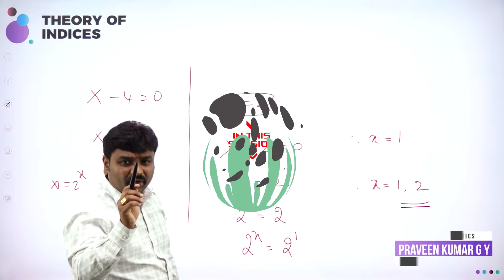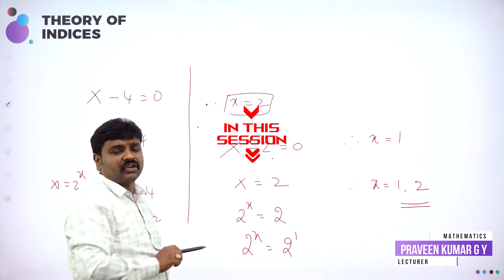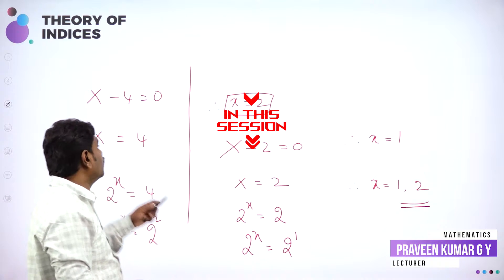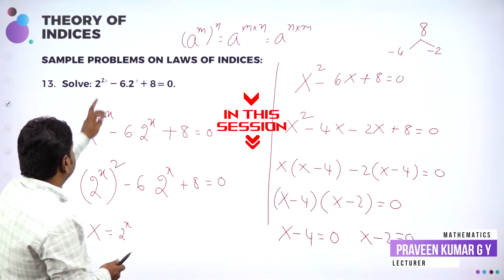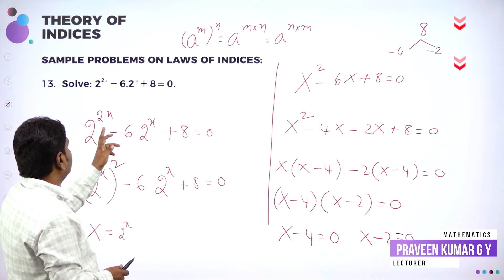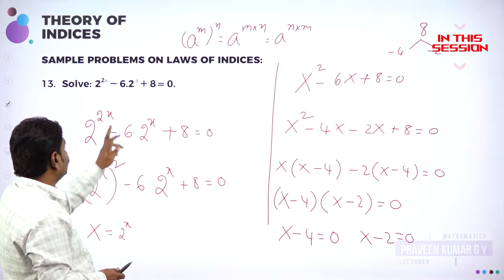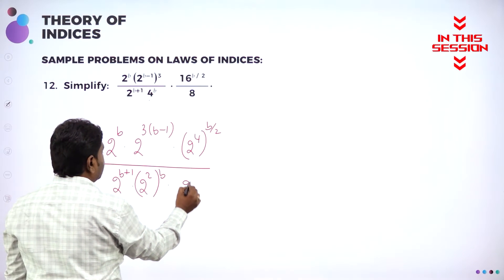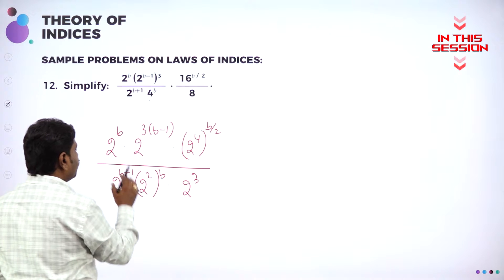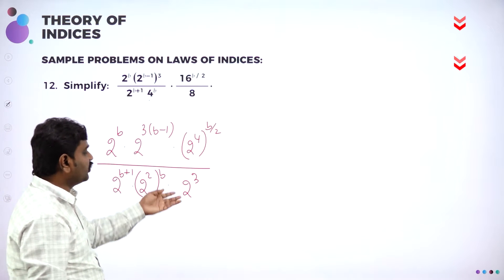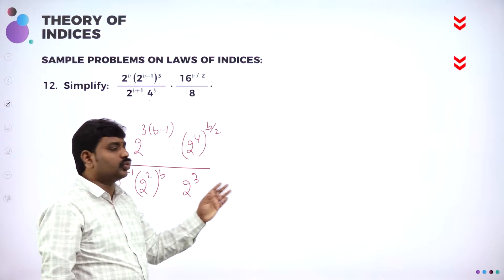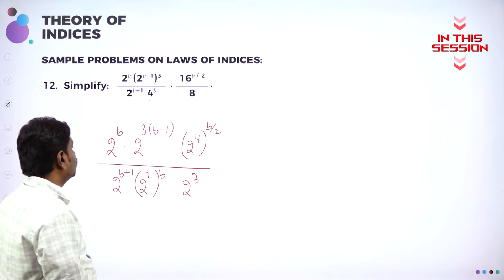Solve means find the value of x. How to find the value of x? Convert it. See here the logic is simple. 2x can be written as 2 into x. And I can take 8 and write it as 2 cube. Everything I made in terms of 2. 8 can be written as 2 into 2 into 2, so 2 cube.